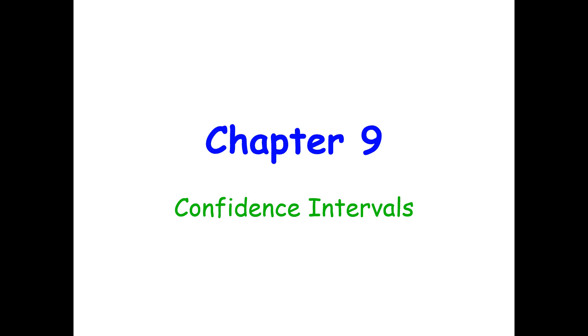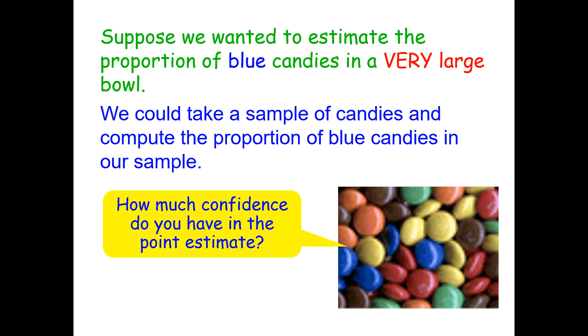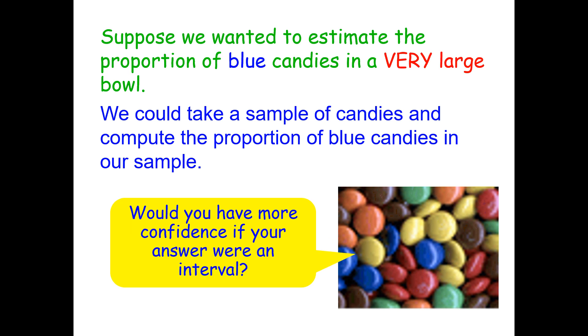In this video, we're going to continue talking about confidence intervals, and specifically, large sample confidence interval for population proportion. Now, suppose we wanted to estimate the proportion of blue candies in a very large bowl. We could take a sample of candies and compute the proportion of blue candies in our sample. But how much confidence do you have in the point estimate? Would you have more confidence if your answer were an interval?